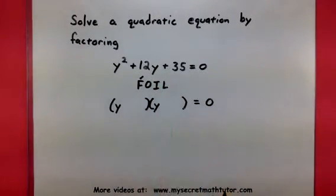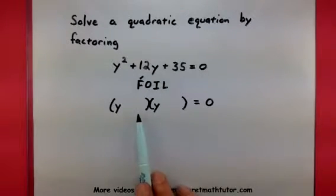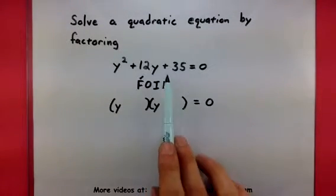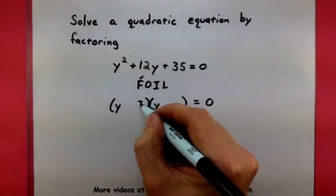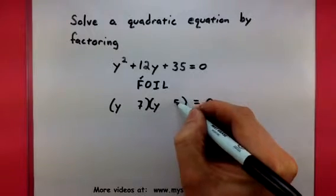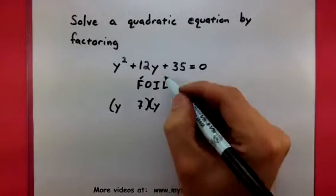Now, I jump over here to my last terms, and I think, okay, what two numbers would multiply to give me a 35? Well, let's see. I guess one option that I have would be 7 and 5. So, I'm going to go ahead and put those in here.